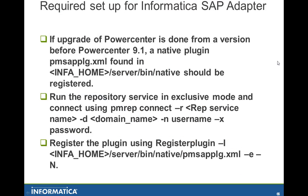Once the RFC_INI environment variable has been set up, we come to the last part of the setup. There is a plugin file called pmsapplt.xml. If you are migrating from a version below 9.1.0 to version 9.1.0 and above, you need to register this plugin. You also need to register this native plugin if you want to use the new functionalities added in 9.1.hf3 versions onwards. I will give a short demo on how to register this plugin.